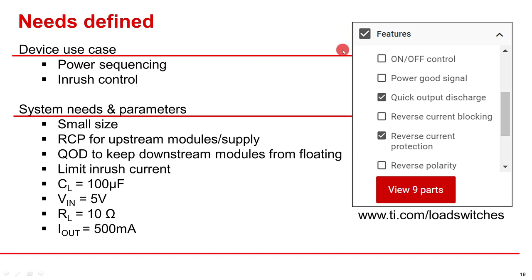We can go to ti.com and filter by the features as shown on the right. To filter the features, we check QOD and RCP. You can see that there are nine parts with these feature sets available.